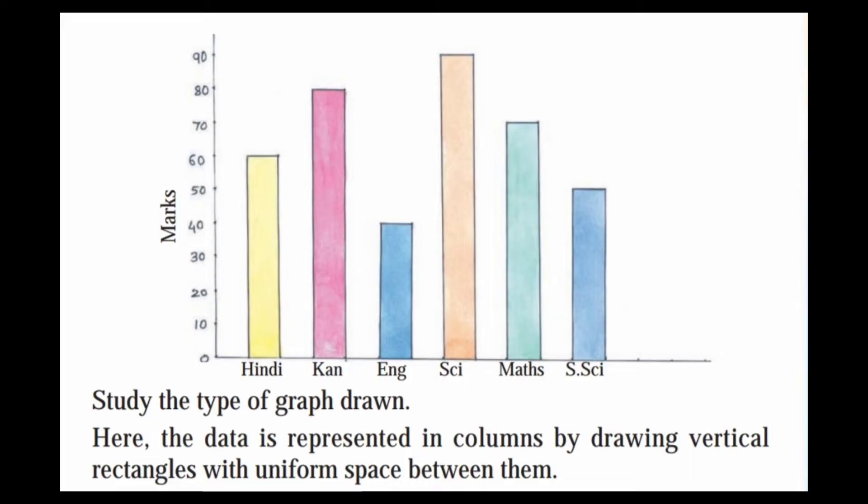The scale used is 1 cm is equal to 10 marks. So the marks are represented as 10, 20, 30, 40 on the axis.